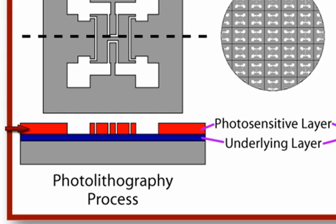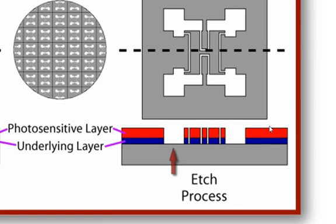In photolithography, the photosensitive material, normally called resist, is deposited on top of another thin film. The resist is then exposed and developed, leaving a pattern that will be etched into the thin film layer or underlying layer.